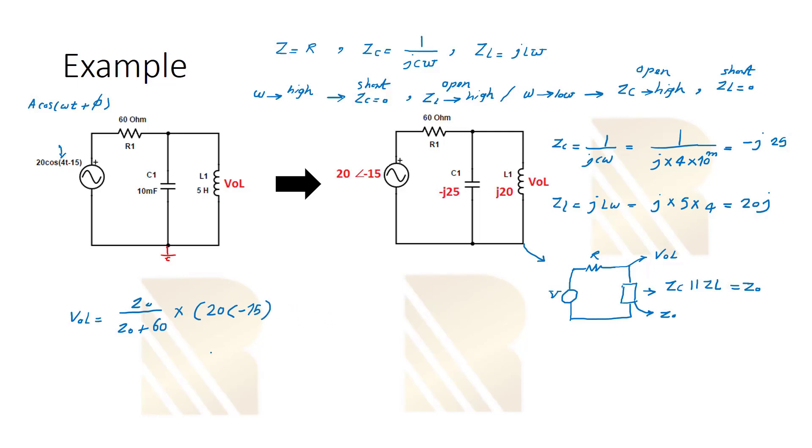So how can we find ZO? First of all, let's find ZO. ZO is the parallel of ZC and ZL. So it means that we will have ZC times ZL over ZC plus ZL. So if you calculate this, it will be 100j. And here now we can find VOL. VOL is equal to 100j over 100j plus 60 times 20 minus 15.